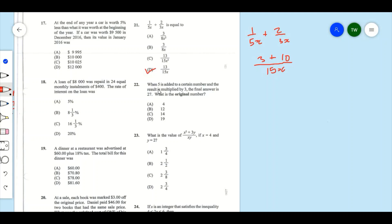Question 22: When 5 is added to a certain number and the result is multiplied by 3, the final answer is 27. What is the original number? So we know that when 5 is added to a certain number, let's say the certain number is N, so when 5 is added to N, and the result of that is multiplied by 3, then it should result to 27, right?